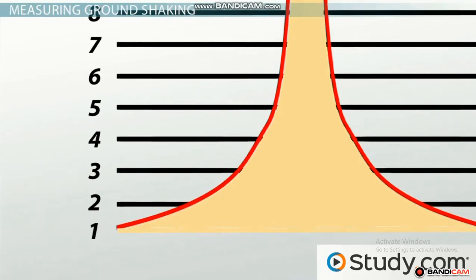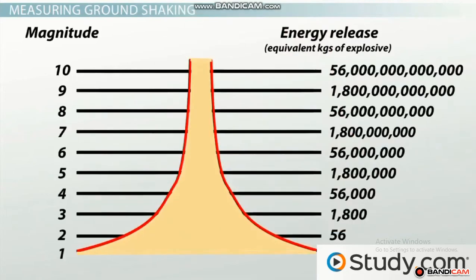That's a lot of seismic activity. Now let's see how this relates to the total energy released during an earthquake. Through measurements of seismic activity, scientists know that the energy released by an earthquake — which is what causes all that shaking and moving in the first place — increases 32 times for each step up the Richter Scale.